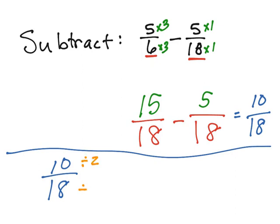So we will divide both the top and the bottom number by 2 to reduce our fraction. So 10 divided by 2 is 5. And 18 divided by 2 is 9. Final answer.